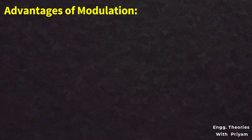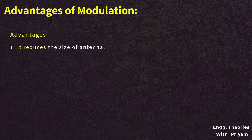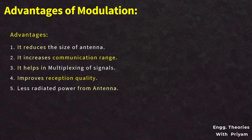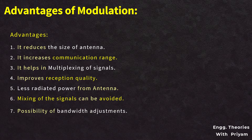The advantages of modulation are: it reduces the size of the antenna, increases communication range, helps in multiplexing of signals, improves reception quality, reduces power radiated from the antenna, avoids mixing of signals, and creates the possibility of bandwidth adjustment.